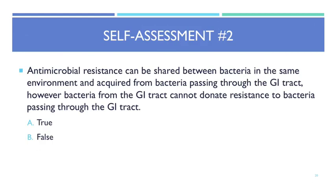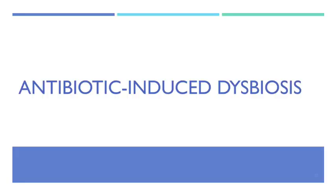Second question: antimicrobial resistance can be shared between bacteria in the environment and acquired from bacteria passing through the GI tract, but bacteria from the GI tract can't donate resistance to those passing through — true or false? False — they can do all three: share, acquire, and donate.